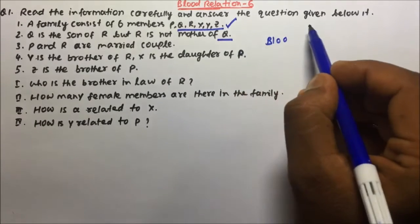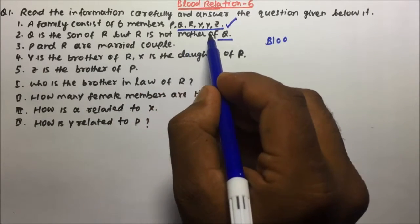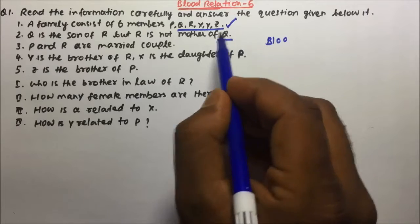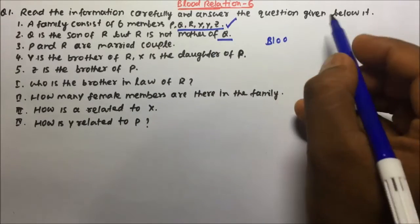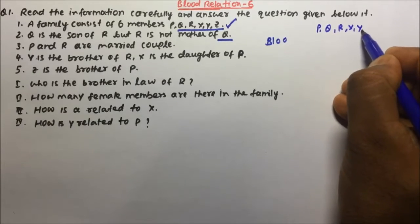Read the information carefully and answer the given question below. A family consists of 6 members: P, Q, R, X, Y, Z. So from the first statement we know that there are 6 members in the family: P, Q, R, X, Y, Z.